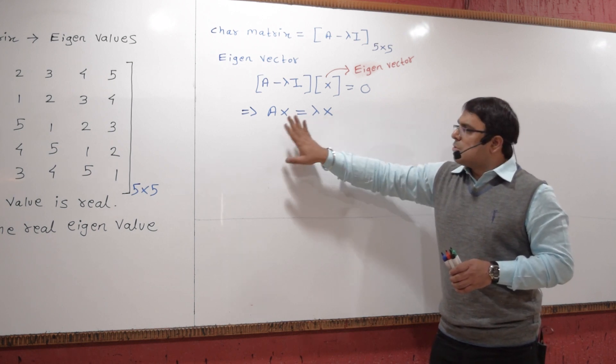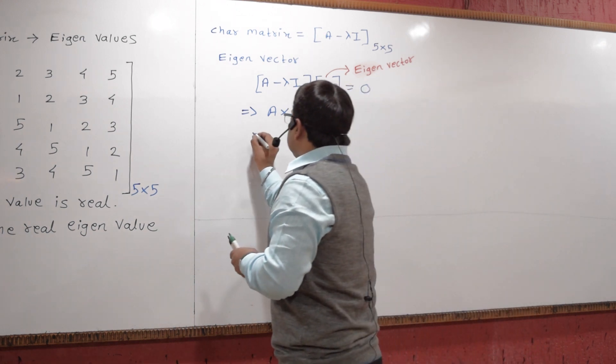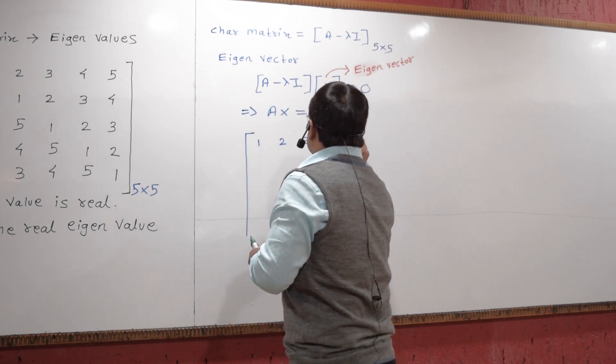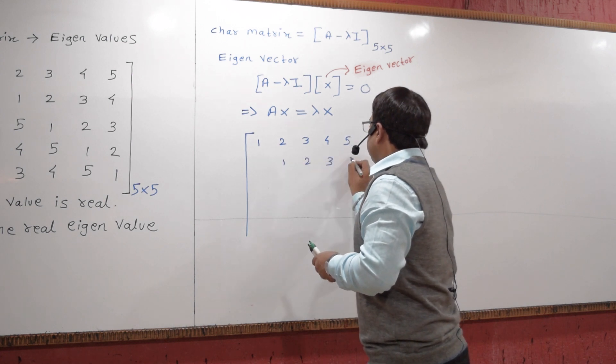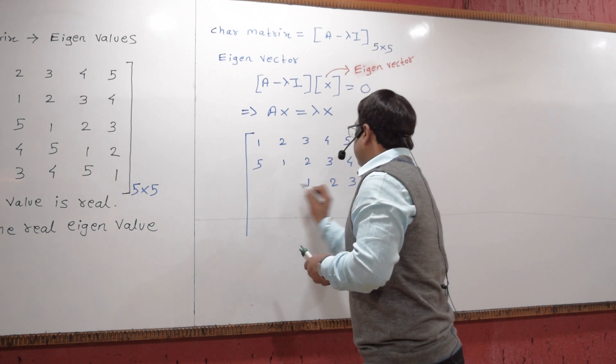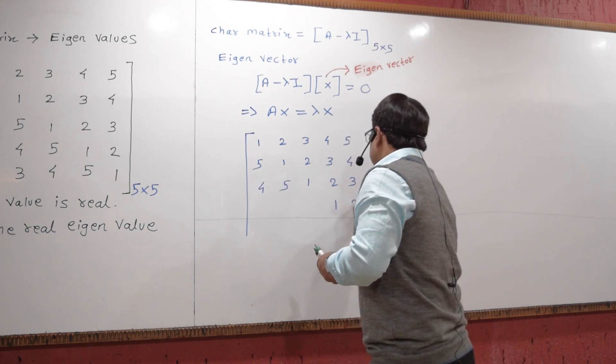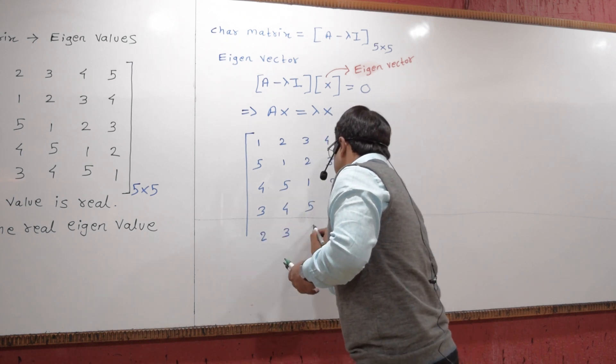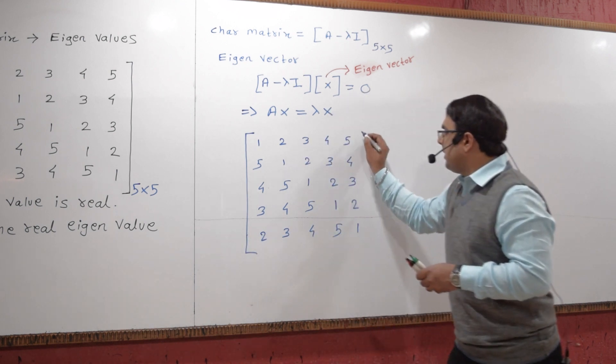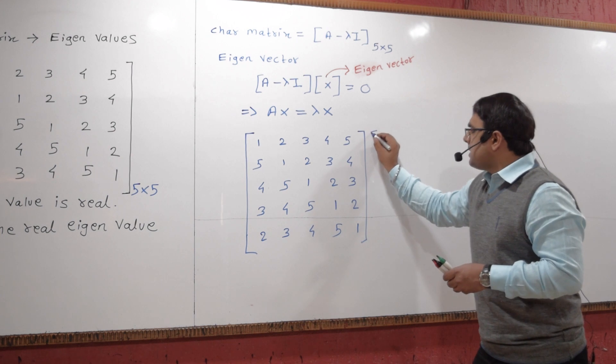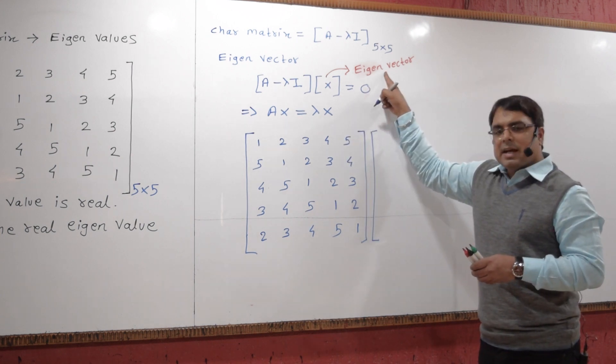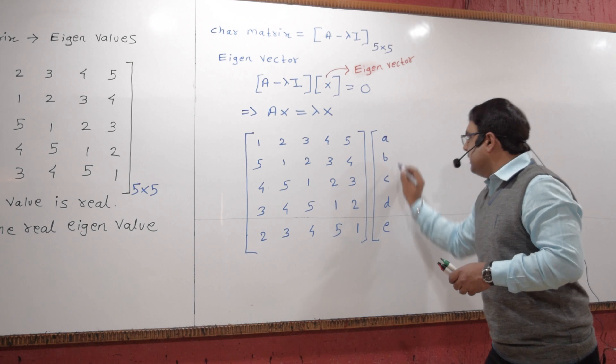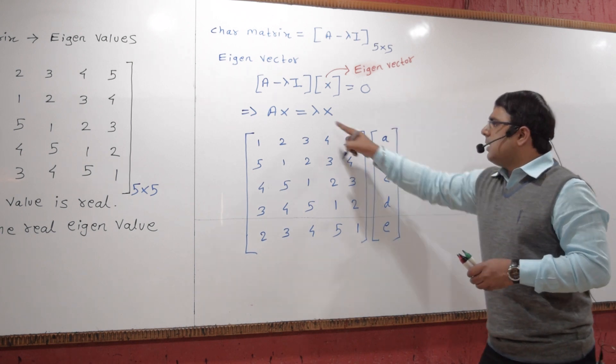Using this equation, we can write matrix A times matrix X. Let me consider the eigenvector as [a, b, c, d, e]. As discussed, lambda is a scalar. Again, your matrix X will be [a, b, c, d, e].